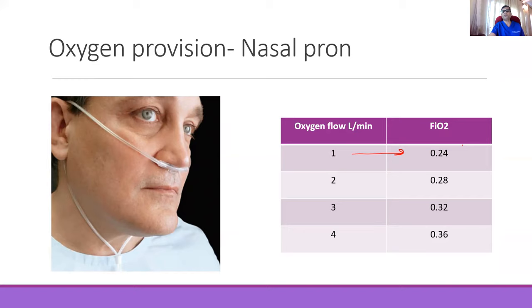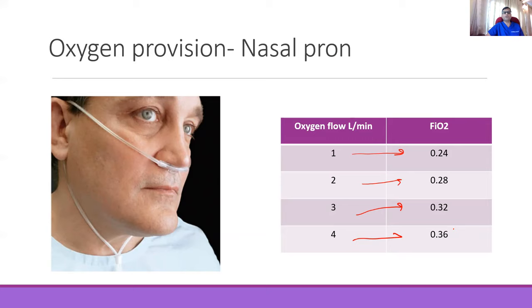There are various ways of calculating the delivered FiO2 with nasal cannula. Generally, at 1 litre you get 24% (FiO2 0.24), and every additional litre adds about 4% to the FiO2 — so 1L=24%, 2L=28%, 3L=32%, 4L=36%. You cannot increase beyond 4 litres practically because it becomes uncomfortable and pressures rise in the tubing. Nasal cannula is used when you need less than 40% oxygen; it's comfortable and requires only a very low flow.